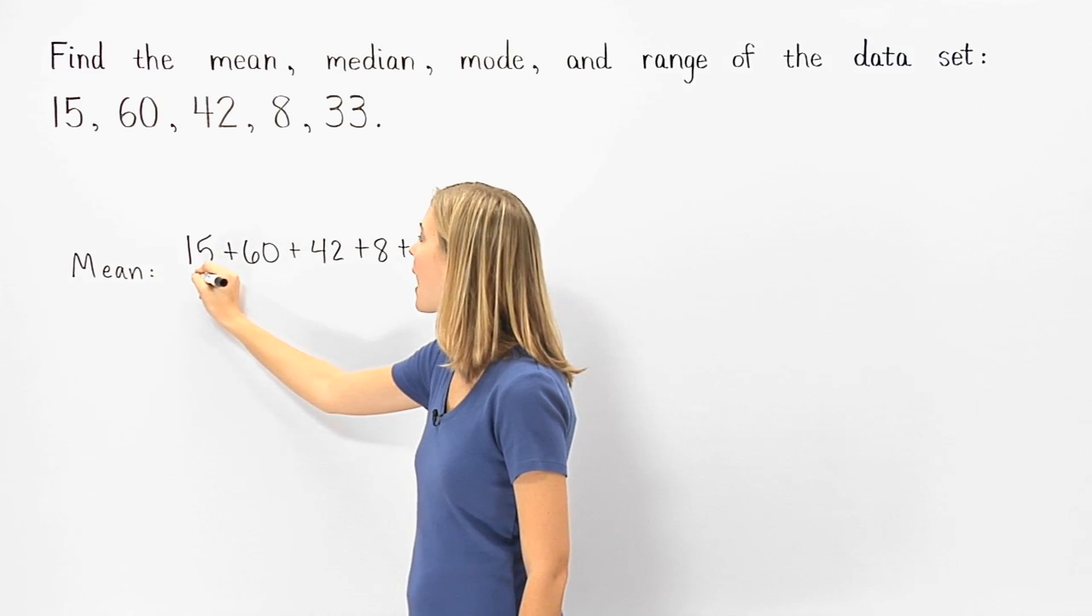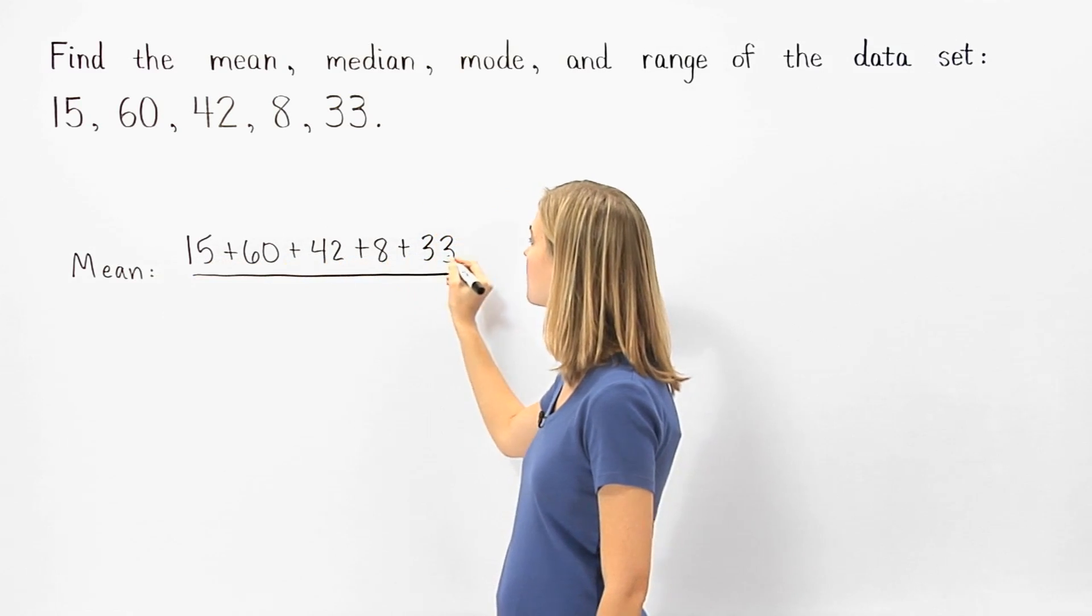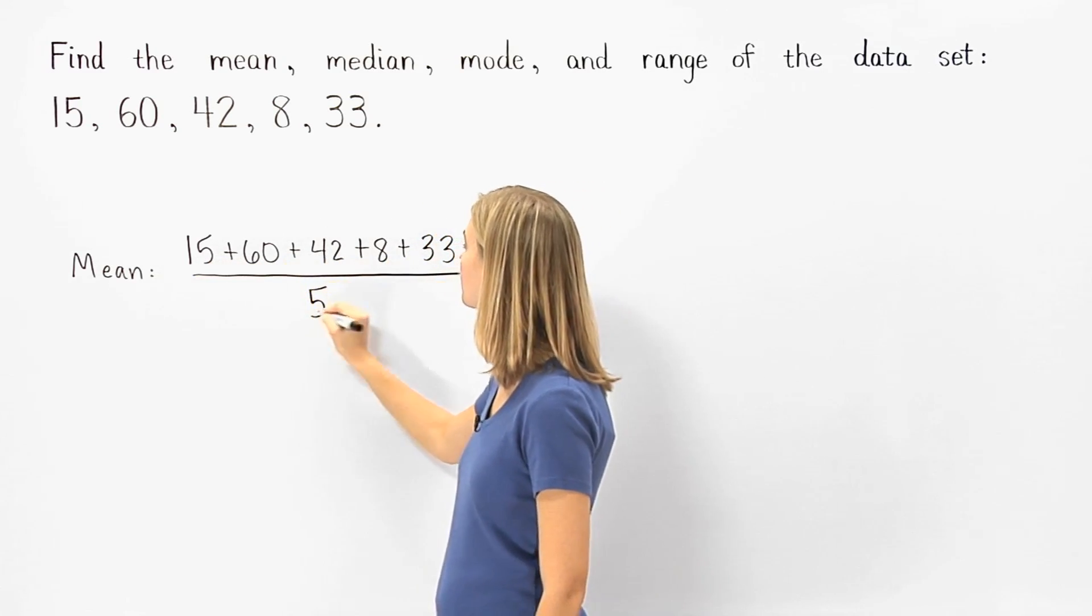Then we divide by however many numbers are in the data set: 1, 2, 3, 4, 5.